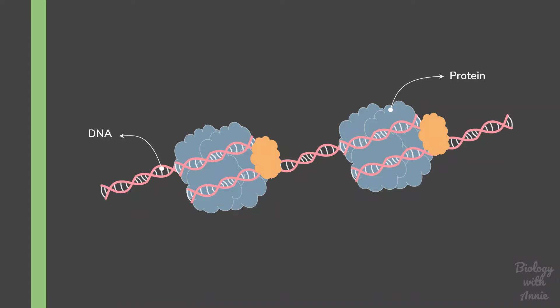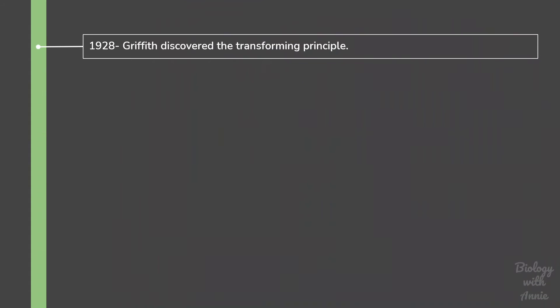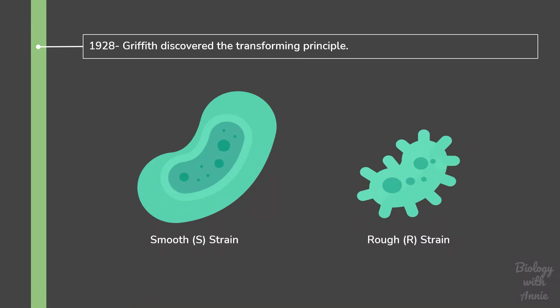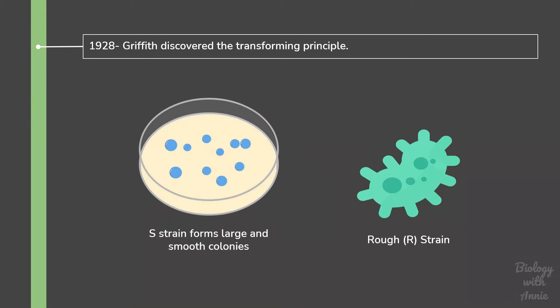The first evidence that the genetic material is DNA was made possible due to Griffith's experiment in 1928. Frederick Griffith was working with two strains of Streptococcus pneumoniae: smooth strain and rough strain. The smooth strain contains an enveloping capsule made of polysaccharides, so when the bacterial cell is grown on solid medium, it divides repeatedly and forms a colony which is large and smooth in appearance.